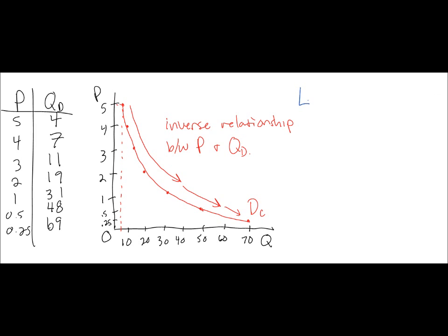And in fact, this relationship is known as the law of demand. Now, if you're a beginning economics student, you may have learned a term called ceteris paribus. This is very important when we talk about the law of demand, because the relationship between price and quantity is strong enough to be considered a law only when all else is held equal. So when we say ceteris paribus, what we mean is that we're assuming that nothing else is changing, like the income of consumers, or the price of related goods, or the expectations of consumers regarding future prices or future income levels and so on.